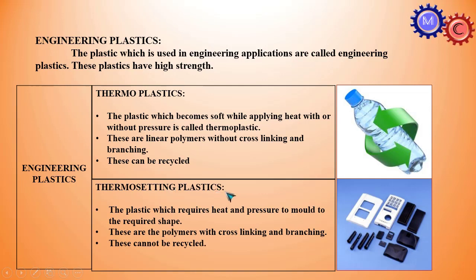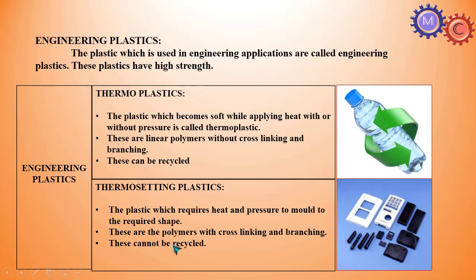Thermosetting plastics. The plastic which requires heat and pressure to mold into the required shape is called thermosetting plastic. These are polymers with cross-linking and branching — the chemical structure is a mesh with cross-linking. These cannot be recycled; once hardened, they cannot be re-molded.